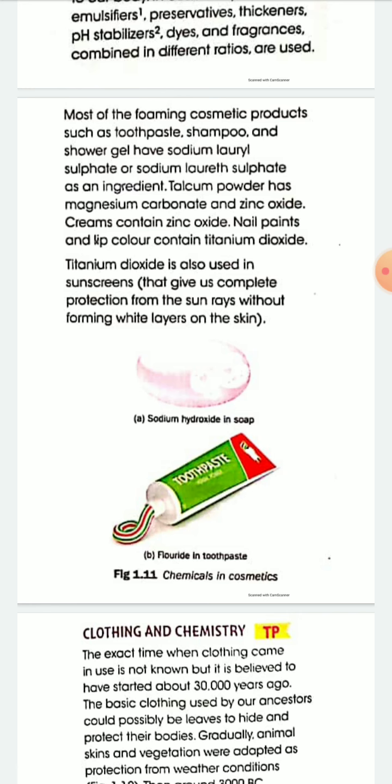If a question asks for the composition of talcum powder, you have to write magnesium carbonate and zinc oxide. For the composition or components of cream, the answer is zinc oxide. Titanium dioxide is also used in sunscreen, which gives complete protection from sun rays without forming a white layer on the skin.